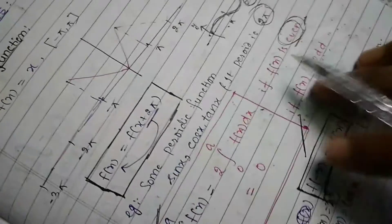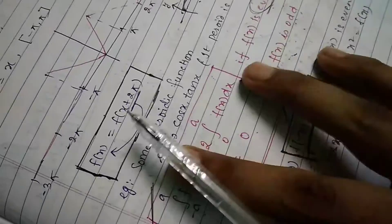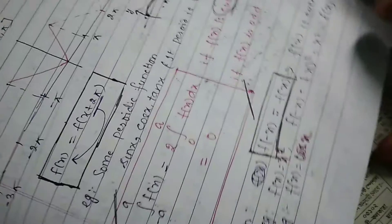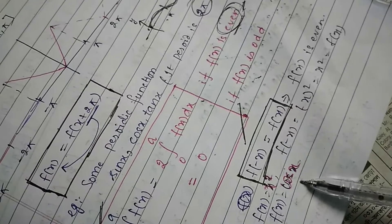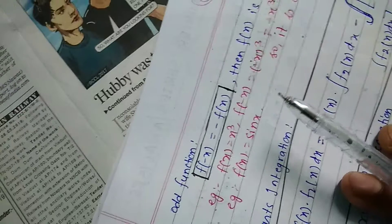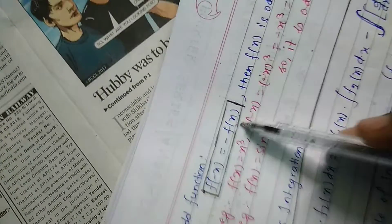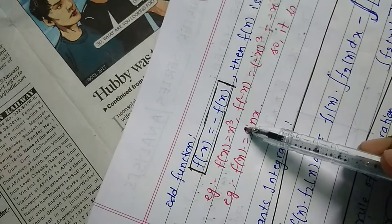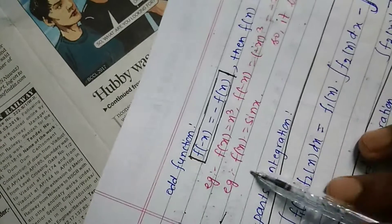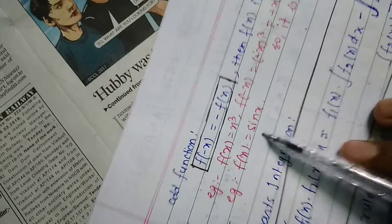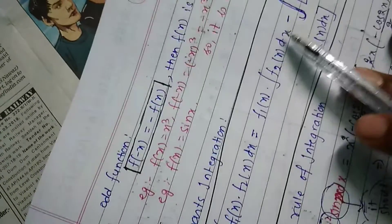To identify whether a function is even or odd: if f(-x) = f(x), it is an even function — for example, x² and cos x. For odd functions, if f(-x) = -f(x), it is odd — for example, f(x) = x³, since (-x)³ = -x³. Also, sin(-x) = -sin(x), so sin x is odd.